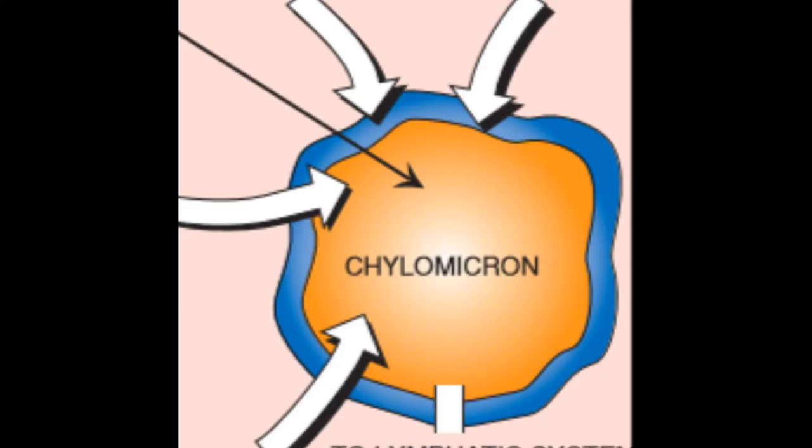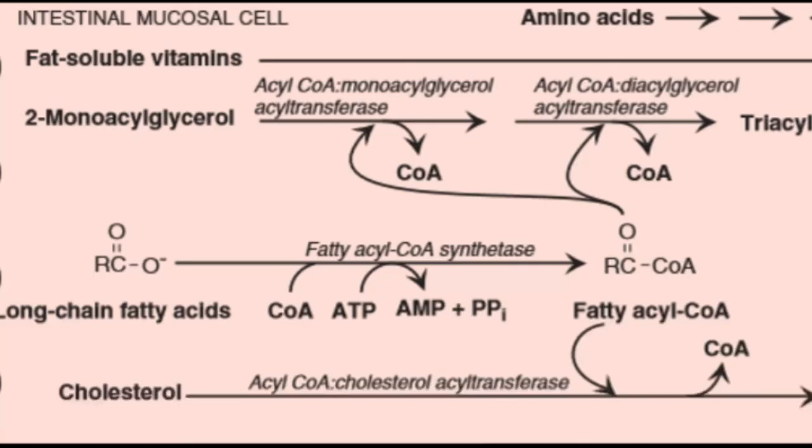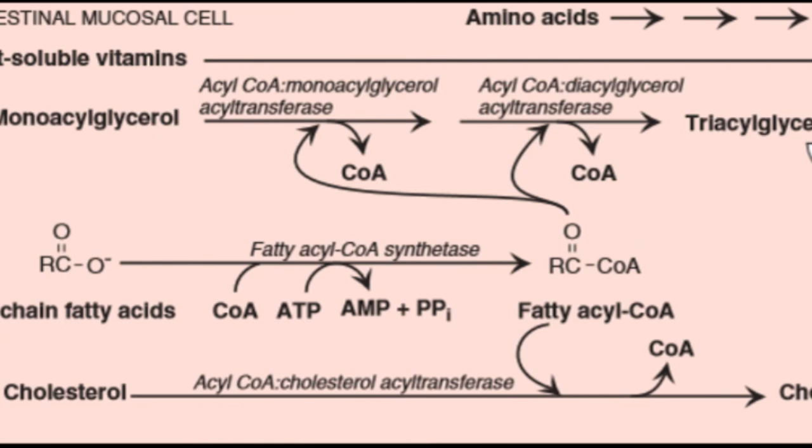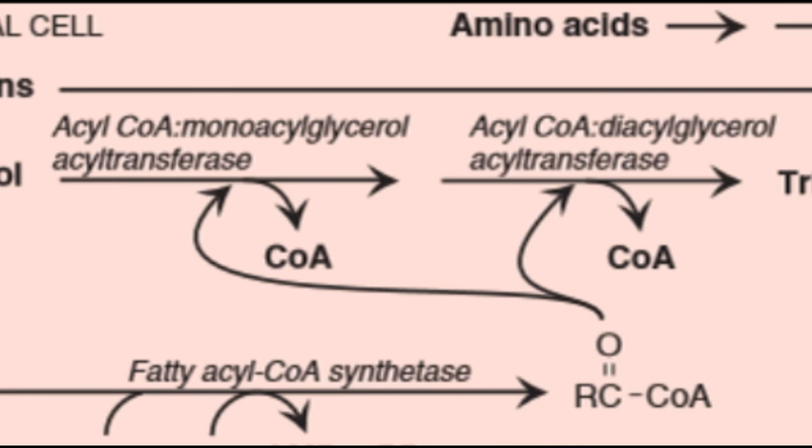But what are chylomicrons made of? They are just the lipid components re-esterified. So the fat, lipid-soluble vitamins, they add to the structure. The same way, the two monoacylglycerols are turned into triacylglycerols with the help of the enzymes acyl coenzyme A monoacylglycerol acyltransferase and acyl coenzyme A diacylglycerol acyltransferase, with the addition of coenzyme A.